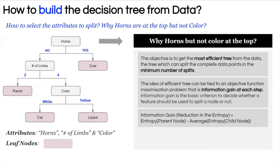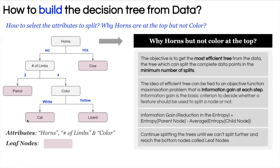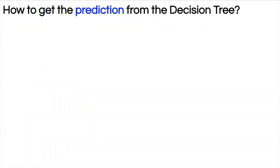At the very first step we try different attributes — horns, number of limbs, color — and calculate the information gain for each. We calculate the average entropy of, say, horns and subtract the average entropy of the child nodes, then do this for all attributes and pick the one with maximum information gain. In this case horns gives the maximum information gain, which is why it is chosen first. We repeat this at every step to build the complete tree.